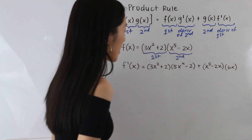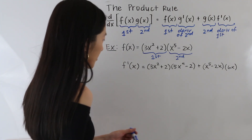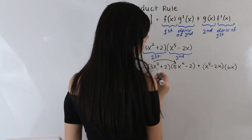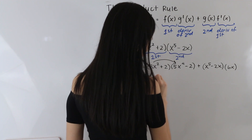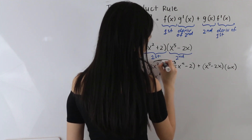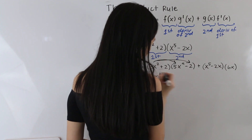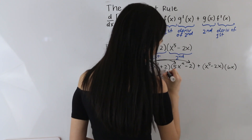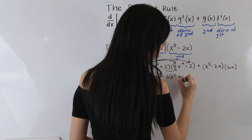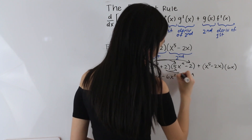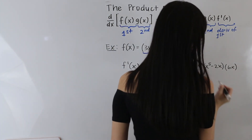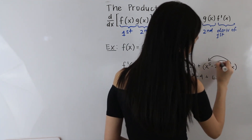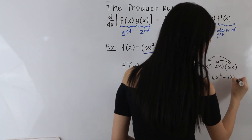From here, let's go ahead and expand our terms so we can simplify. We have 3x squared times 5x to the fourth, which is 15x to the sixth, and then we also have negative 6x squared. Then we have plus 10x to the fourth and minus 4, and 6x to the sixth minus 12x squared.